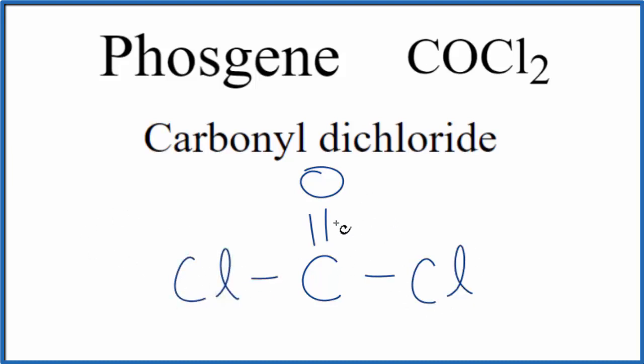So this way, the carbon has one, two, three, four bonds. So it has its octet. There'd be three lone pairs around each chlorine and the oxygen would have two lone pairs. So this is the structural formula here for phosgene, also called carbonyl dichloride.